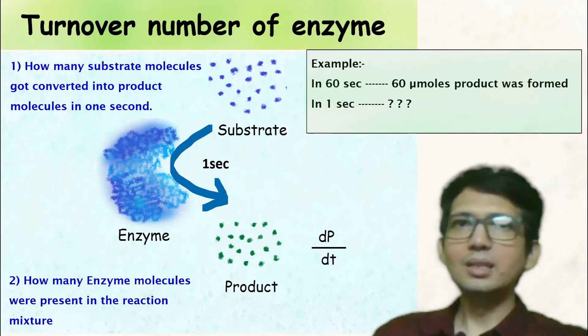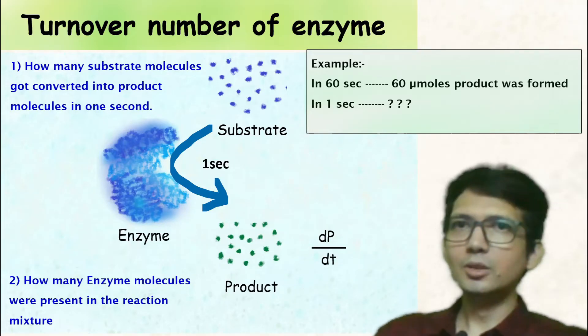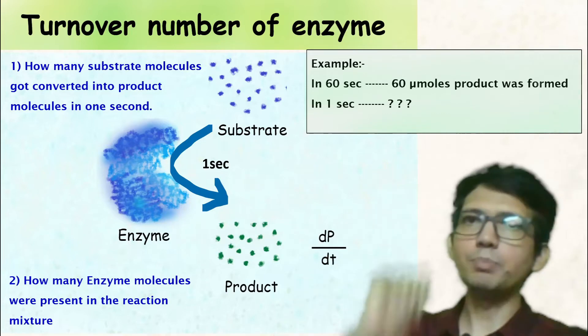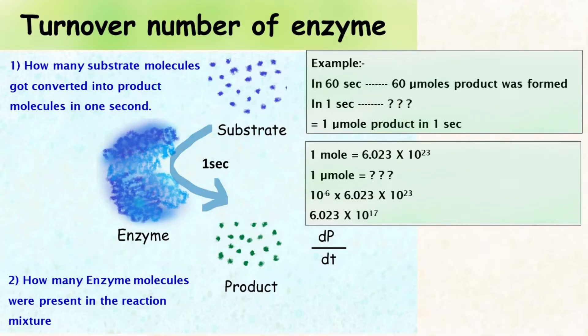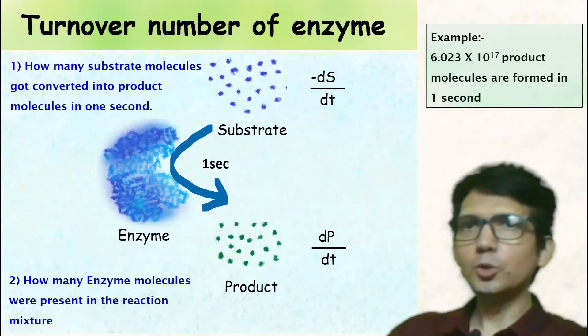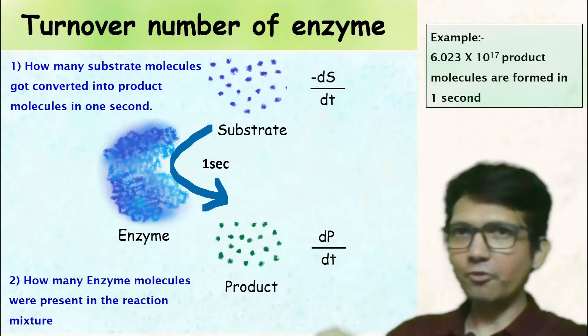Let's say in 60 seconds, 60 micromoles of product was formed. So in one second, one micromole of product was obtained. Since one mole is 6.023×10²³ molecules, one micromole of product contains 6.023×10¹⁷ molecules. So 6.023×10¹⁷ molecules are formed in one second.